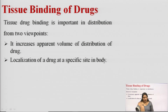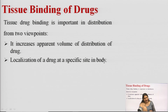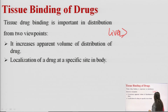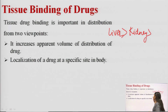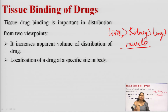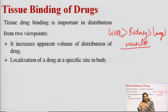For the majority of drugs binding to extravascular components, the order of binding from highest to lowest is: liver, followed by kidney, then lungs, and finally muscles.